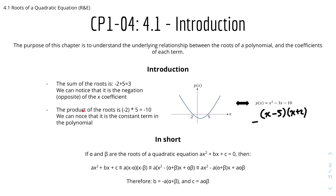The product of the roots is minus 2 times 5, which equals minus 10. We can notice that it is the constant term in the polynomial — minus 10 and minus 10.